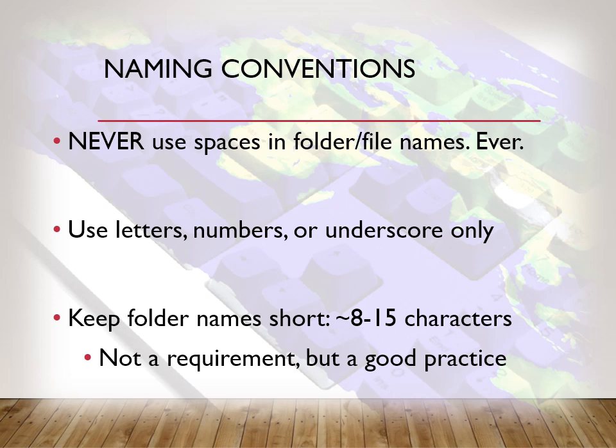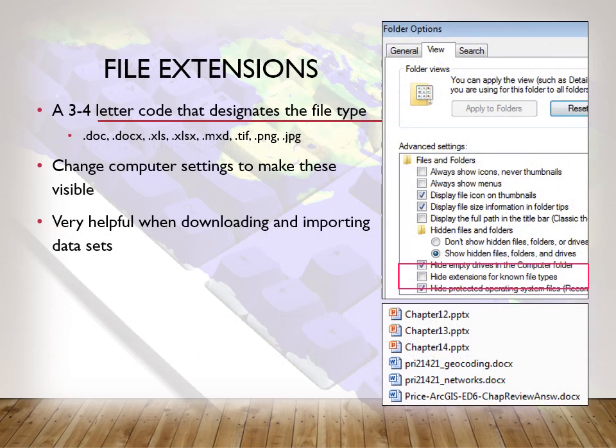Never, ever use spaces in folders or file names. File names especially — ArcGIS will not allow file names with spaces. Sometimes a folder can have a space, but if you're doing a certain process or tool, every once in a while it will not like that space in the folder. You want to use letters, numbers, and if you want to make a space, use an underscore. Keep your folder names relatively short. In Windows, make sure you have your file extensions shown — go to folder options, view, and uncheck hide extensions. That way you know what the extension is, because there are several types of GIS data.